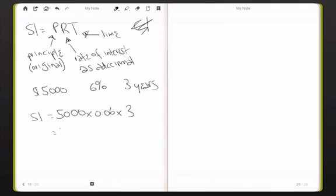So if you type this into a calculator, you will find out that it's $900 interest. So if you took out a $5,000 loan over three years with 6% interest, you'd have to pay an extra $900 on it.